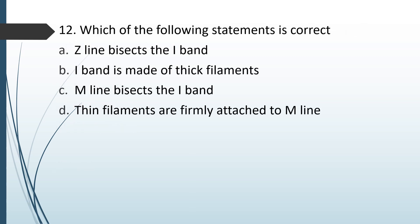Which of the following statements is correct about a sarcomere? Option A: Z line bisects the I band. Option B: M line bisects the I band. Option C: thin filaments are firmly attached to the M line. The correct answer is option A — Z line bisects the I band.